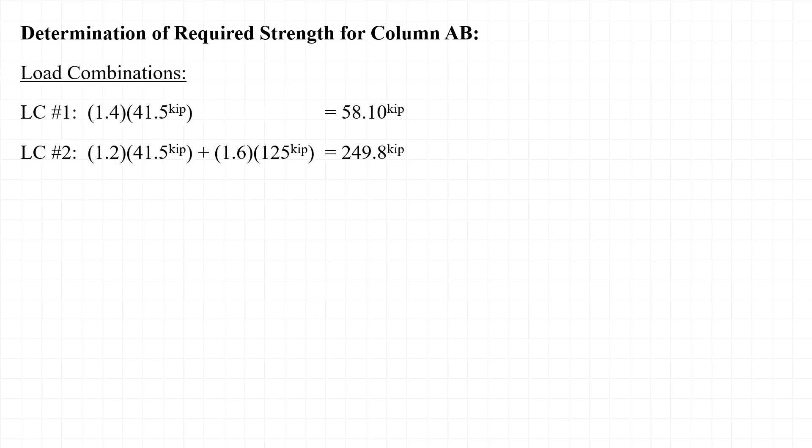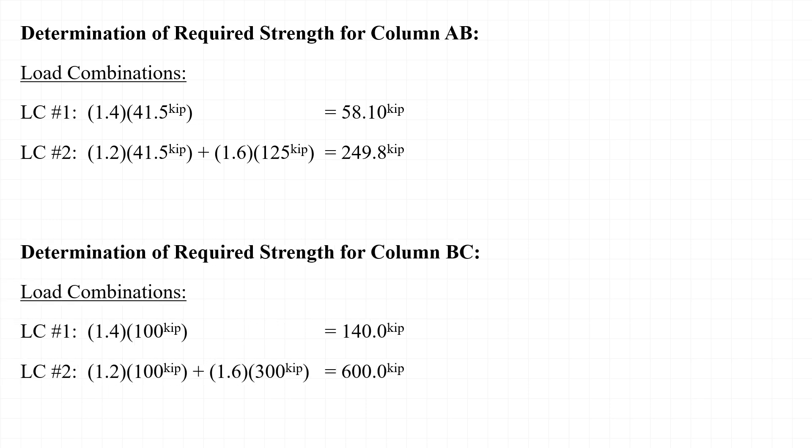Next, we'll calculate the required strengths for the columns. Using the load combinations from ASCE 7, we find that the required strength for column AB is 250 kips and that the required strength for column BC is 600 kips.